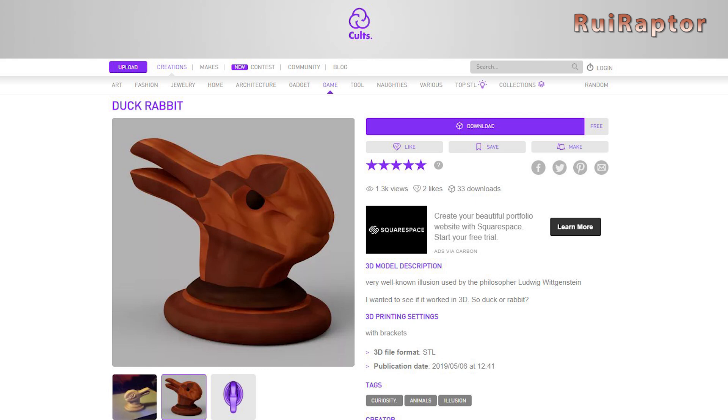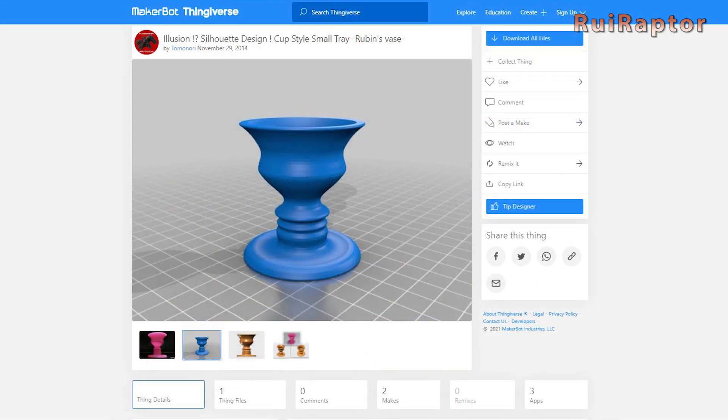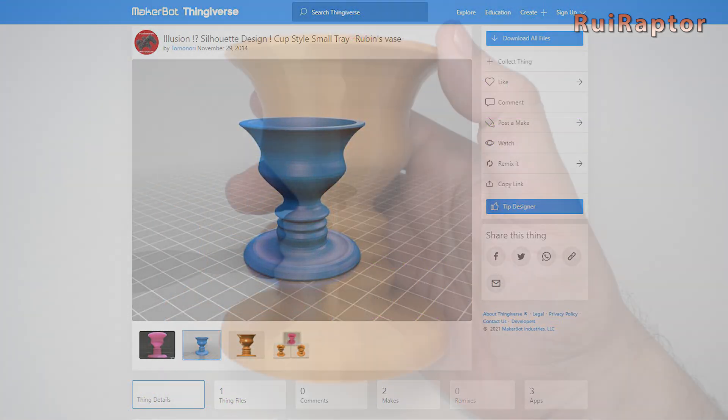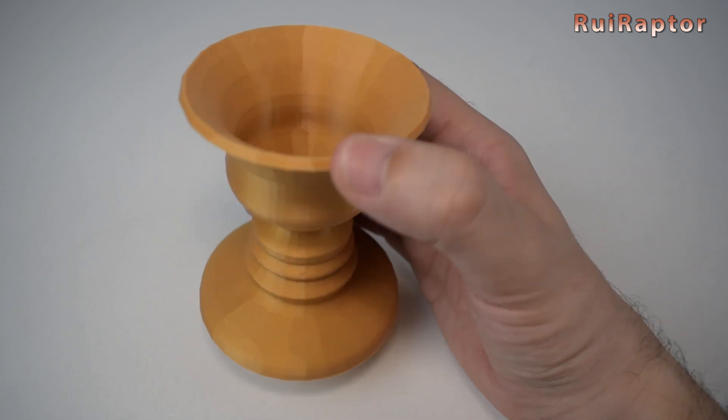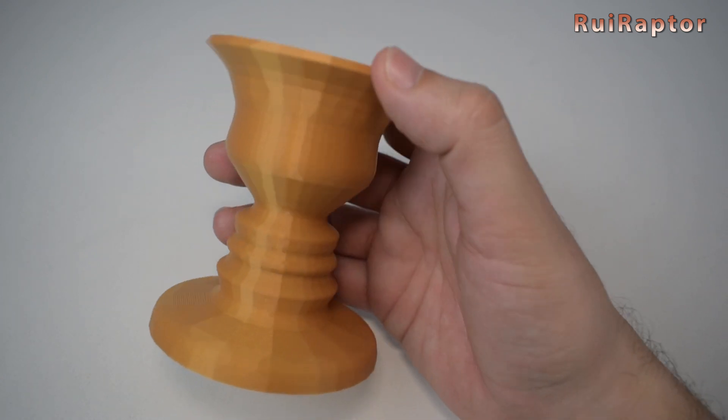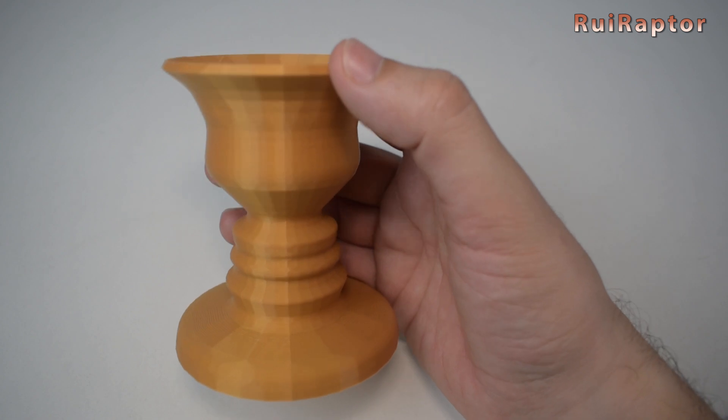On websites such as Cults or Thingiverse, we can find these two models to print. We chose to print a vase. And here, you can see the effect we can get from it.